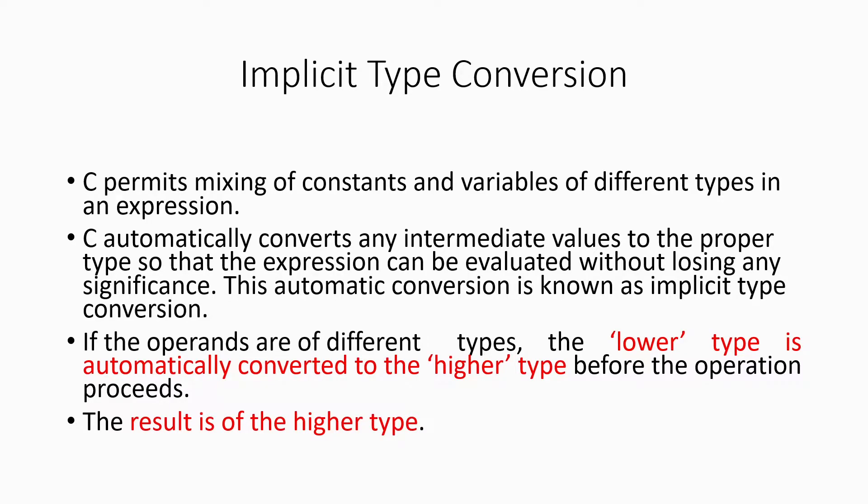In implicit type conversion, C allows us to mix different types of data together. When we evaluate an expression, some variables can be of integer type, some can be float, some can be double. C allows mixing different data types in one expression, and what is performed is implicit type conversion — it automatically converts any data to a convenient data type.